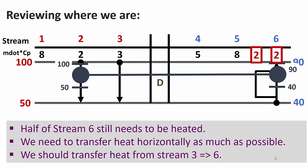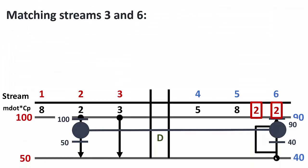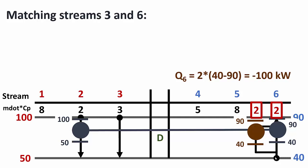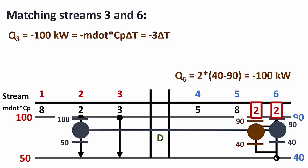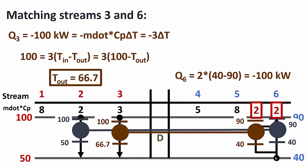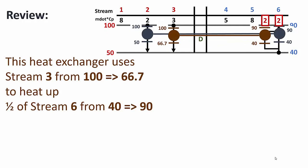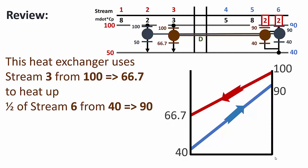Half of stream 6 still needs to be heated. We transfer heat horizontally, matching streams 3 and 6. Stream 6 half has Q = 2 × (40 − 90) = −100 kW, which is transferred to stream 3: −100 = −3 × (T_in − T_out). We specify T_in = 100°C (starting from the top) and solve for T_out = 66.7°C. This heat exchanger uses stream 3 from 100 to 66.7°C to heat the other half of stream 6 from 40 to 90°C. The temperature graph confirms the minimum approach temperature is not violated.